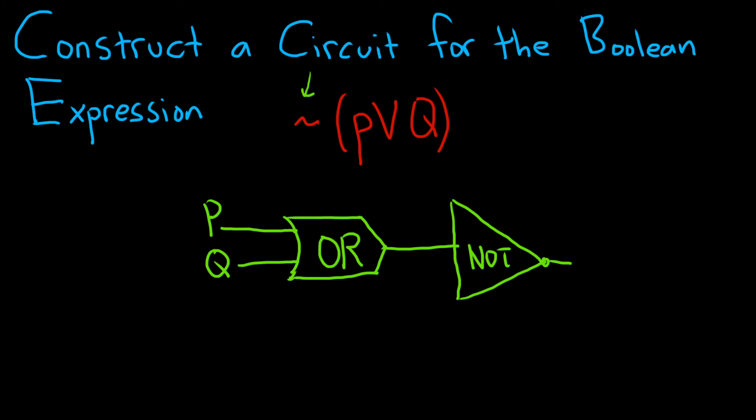You can always check your answer in these problems by working backwards. Let's do that. We have P and Q entering the OR gate, which gives us P or Q. Then P or Q enters the NOT gate, and that gives us NOT(P or Q).